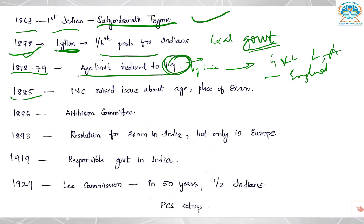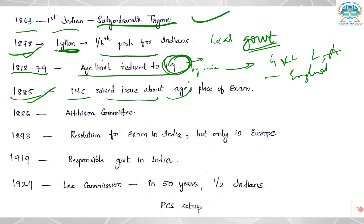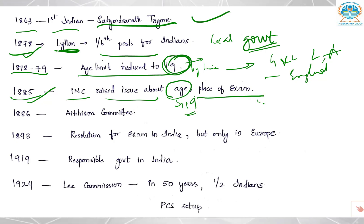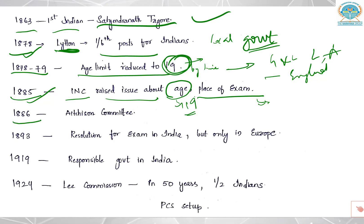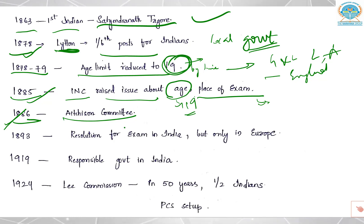In 1885, the year of formation of Congress, the Indian National Congress raised the issue about the age limit — 19 is too young. They talked to the British about it and also raised the issue about the place of exam, that it should also be conducted in India so that Indians can write the exam and be part of administration. In 1886, Aitchison Committee was formed — also important for prelims. Aitchison Committee is related to civil service reforms.